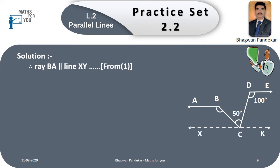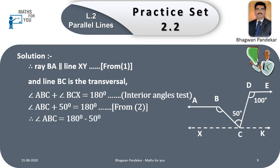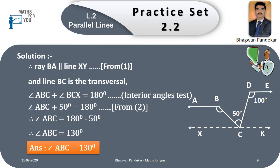Ray BA is parallel to line XY from equation one, and line BC is a transversal. Therefore, angle ABC + angle BCX = 180° by the interior angle test. Therefore, angle ABC + 50° = 180° from equation two. Therefore, angle ABC = 180° − 50° = 130°. Therefore, angle ABC = 130°. This is the final answer.